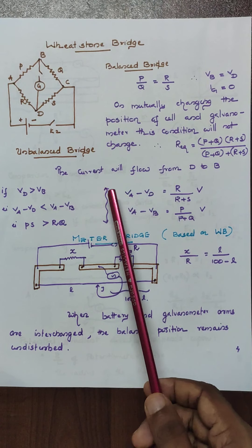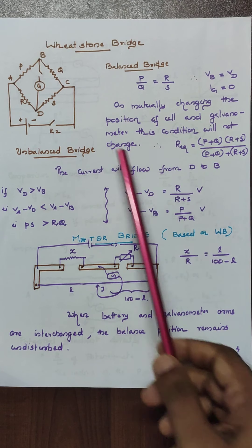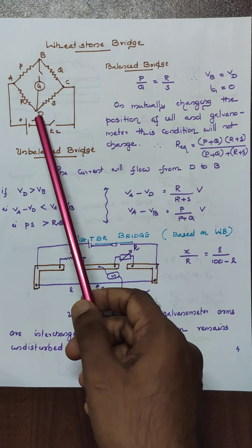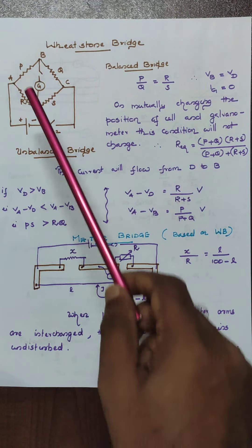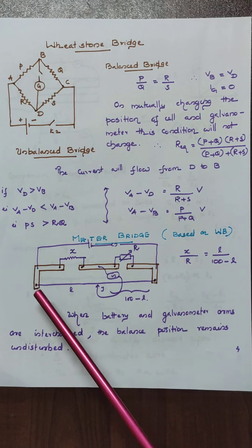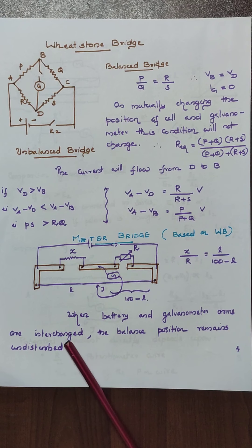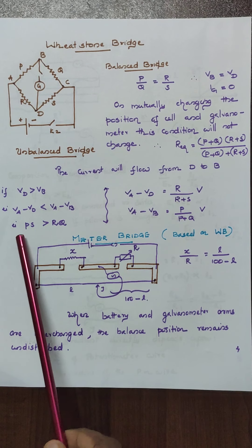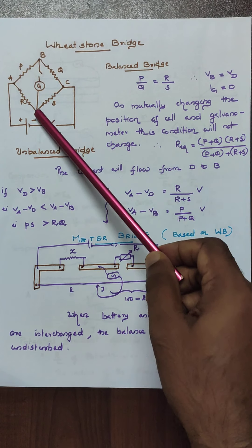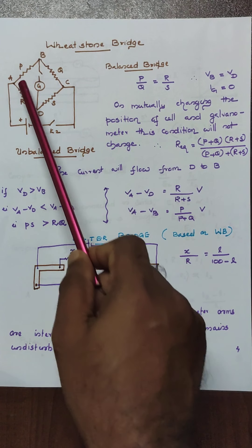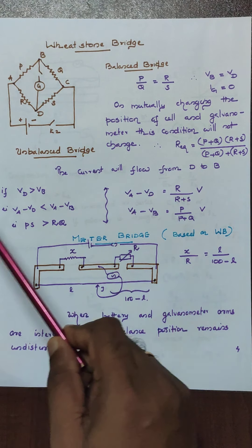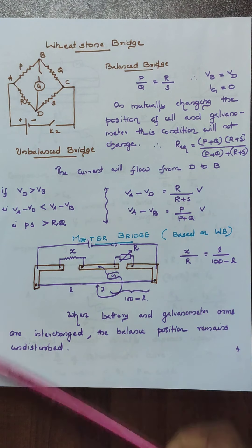Keep in mind that the current will flow from D to B if the potential at point D is greater than B — that means Vm minus Vd should be less than Vm minus Vb. The condition for current to flow from D to B is that PS should be greater than RQ. This is a very important concept.